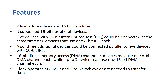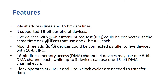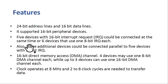The main features of the ISA bus include 24-bit address lines and 16-bit data lines. Data lines convey bits from one device to another, while address lines determine the location of the source and destination of the data. It is a 16-bit peripheral system. It can handle interrupt requests (IRQ) — a hardware signal sent to the processor that temporarily stops the running program and allows a special interrupt handler to run instead. Up to five devices can be connected with 16-bit IRQ at the same time, or six devices using one 8-bit IRQ each.